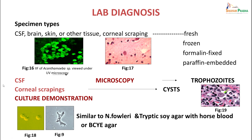For lab diagnosis, specimens usually include CSF, brain tissue, skin or other tissue, or corneal scraping. Fresh mounts can be prepared, frozen, or paraffin-embedded and stained. Immunofluorescent staining or direct trichrome staining can be used to look for amoebae. Microscopy is performed looking for trophozoites and cysts. Culture can be done on tryptose soy agar with horse blood or BCYE agar, where clearing of areas similar to Naegleria culture indicates the presence of trophozoites.